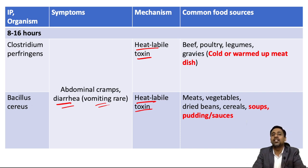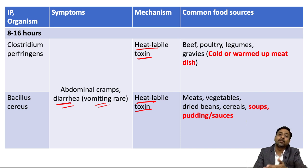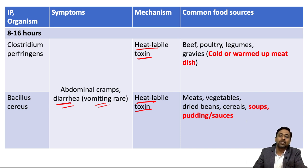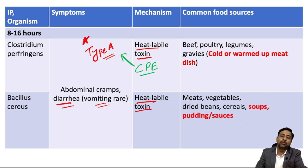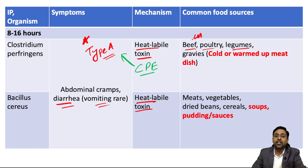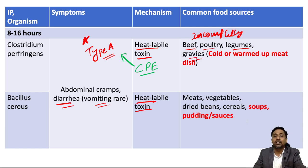Food gets contaminated by heat-resistant spores from both organisms. Once consumed, inside the small intestine, the spores germinate into vegetative form and then release the heat-labile toxin, leading to food poisoning. This is why the incubation duration is longer. The toxin responsible for Clostridium perfringens food poisoning is CPE — Clostridium perfringens enterotoxin — and it is mainly type A Clostridium perfringens responsible for most food poisoning cases. Common food sources are beef, poultry, and legumes consumed when incompletely cooked.